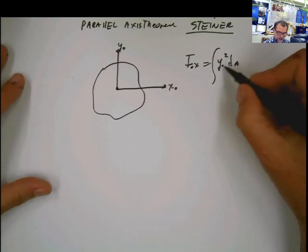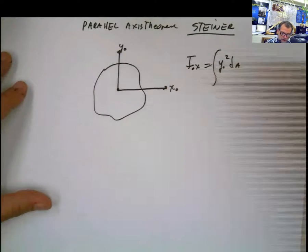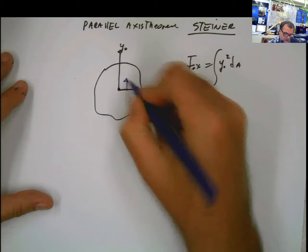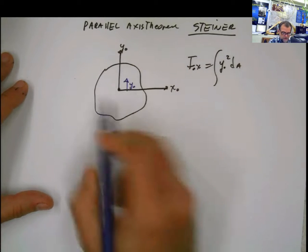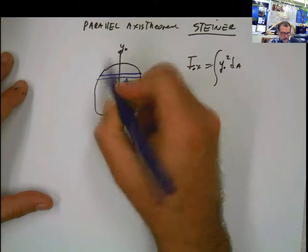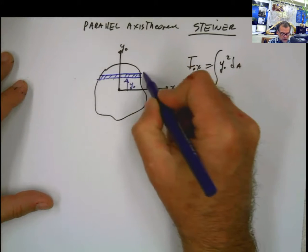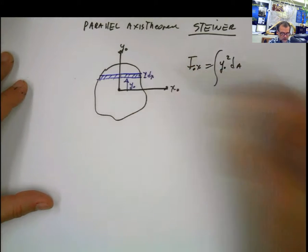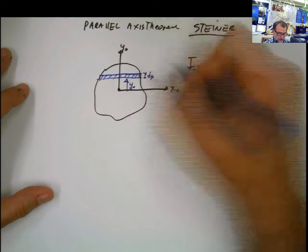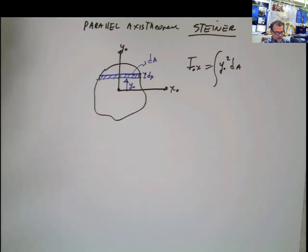I'm just adding this subscript 0 here, which I didn't add before, because this formula comes from here. Remember, I'm going to measure my distance from there and put my differential of area perpendicular. This is going to be dy₀ in this case, or dy. This is going to be my dA. That's what we have been doing.